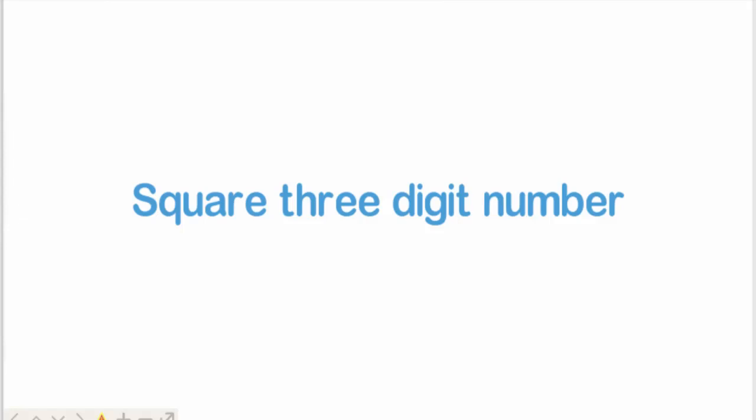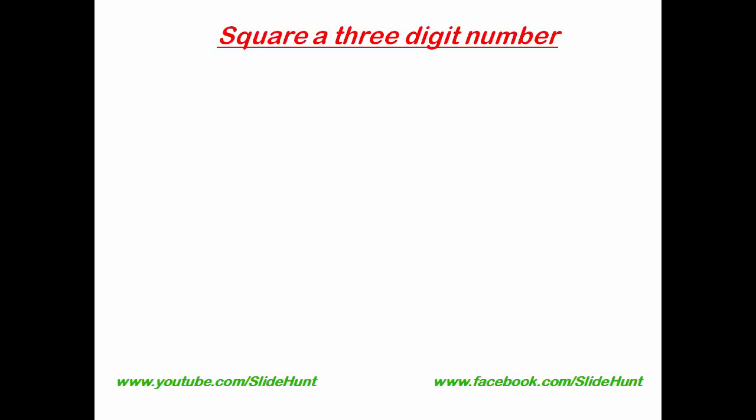I'll tell you some tricks at the end of the video, so stay with us till the end. For example, here we take 217. To find out the square of this number, first find out the difference between 217 and the nearest hundreds number. Hundreds numbers mean 100, 200, 300, 400, and so on. The nearest hundreds number of 217 is 200, and the difference is 17.